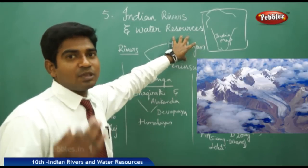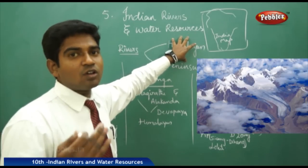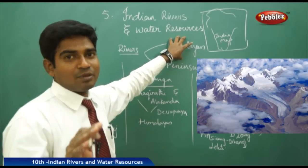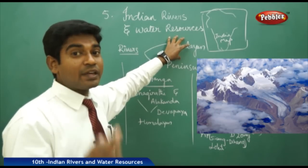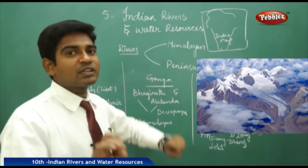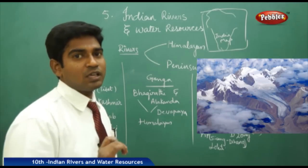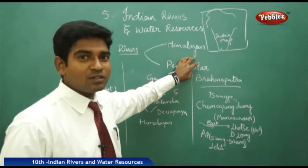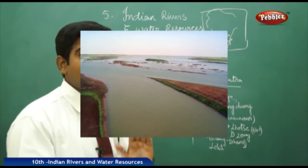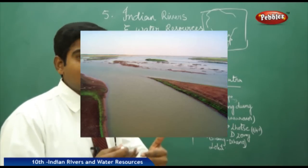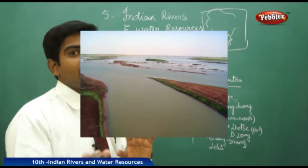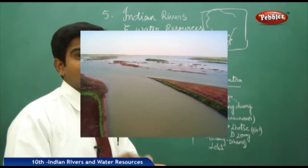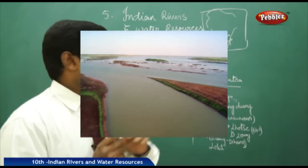The rivers which are originating from the Himalayan belt or which have their source of water from the Himalayan region are called Himalayan rivers. These are also known as perennial rivers because they flow continuously throughout the year. When it comes to the Peninsular rivers, they may have a seasonal impact — in summer and winter seasons, they may be in dry conditions or the water level may be less compared to the rainy season.